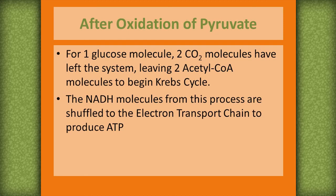After the oxidation of pyruvate, for one glucose molecule, two CO2 molecules have left the system in order to leave two acetyl CoA molecules to begin the Krebs cycle. The NADH molecules from this process are shuttled to the electron transport chain in order to produce more ATP later.